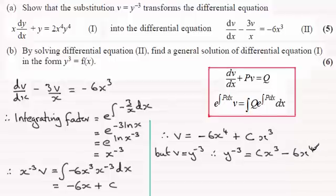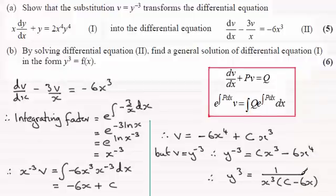And we've got to give it in the form y cubed equals a function of x. So rearranging this, we're going to have y cubed equals 1 all divided by, and I can take out x cubed as a common factor here as well. So you've got x cubed, and then a constant c, minus 6x. And there you go.